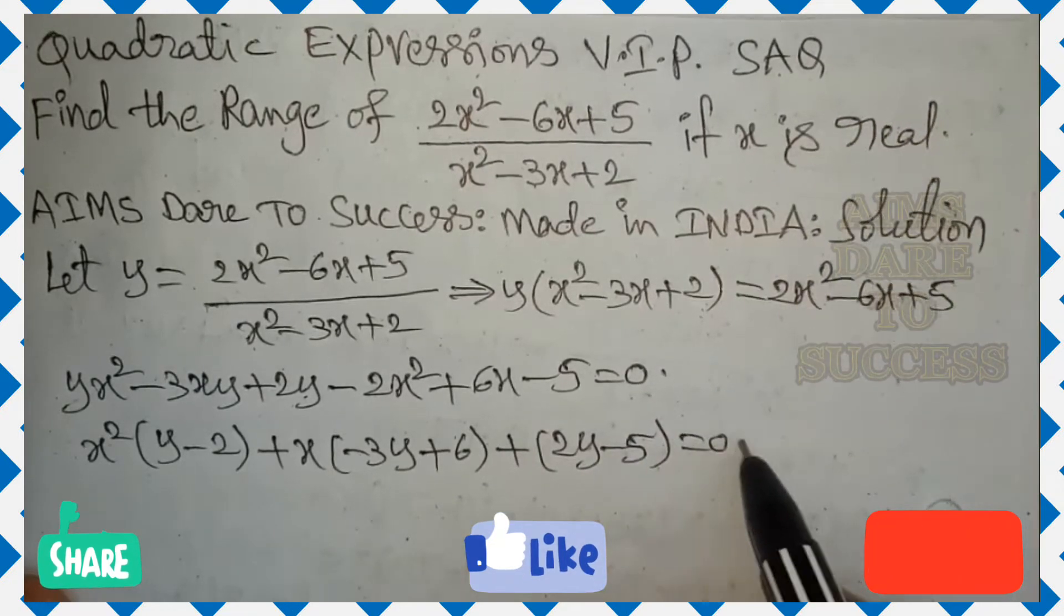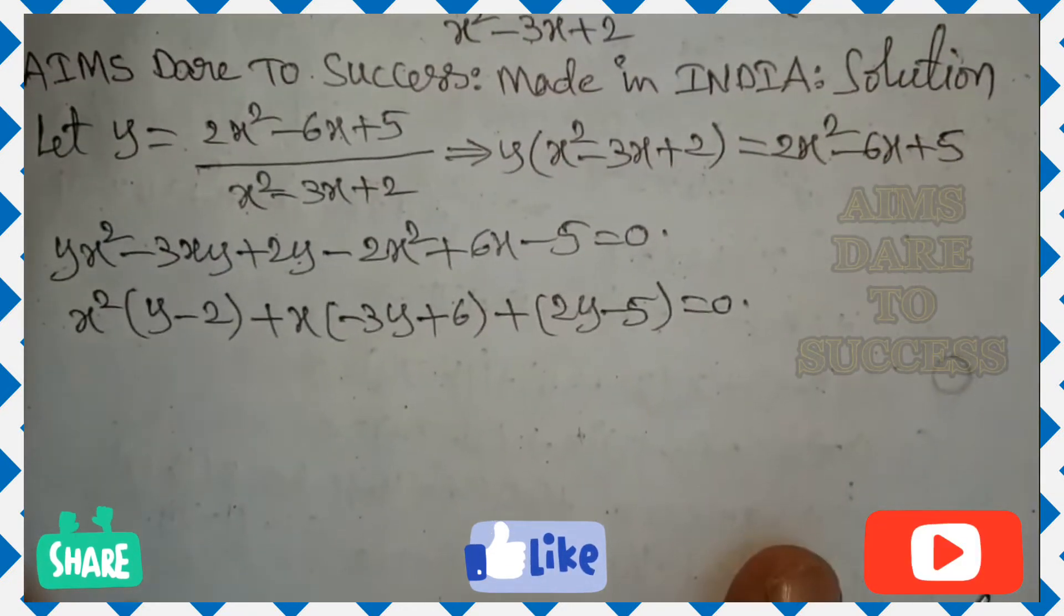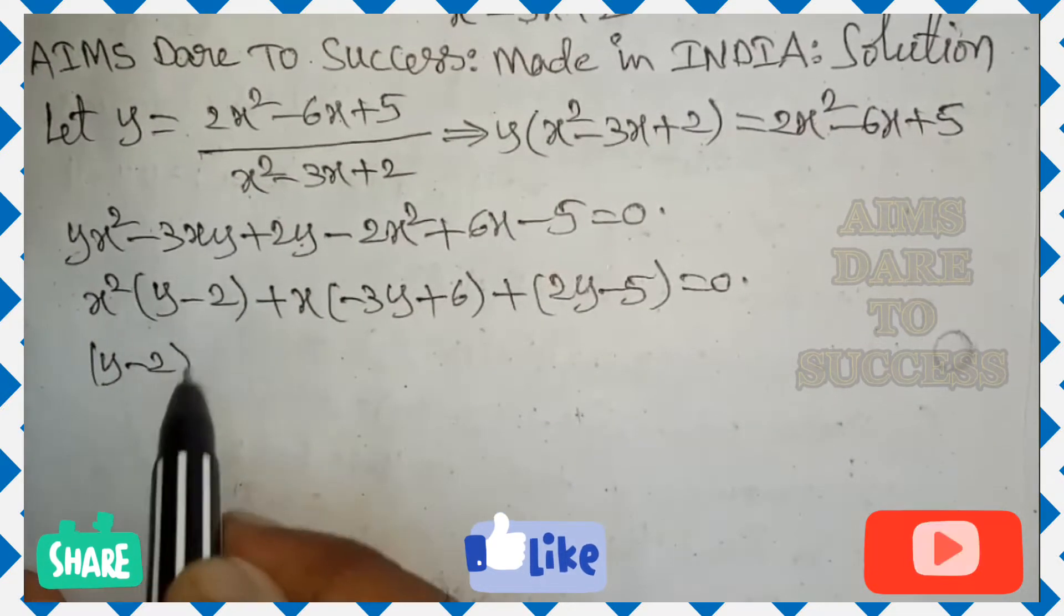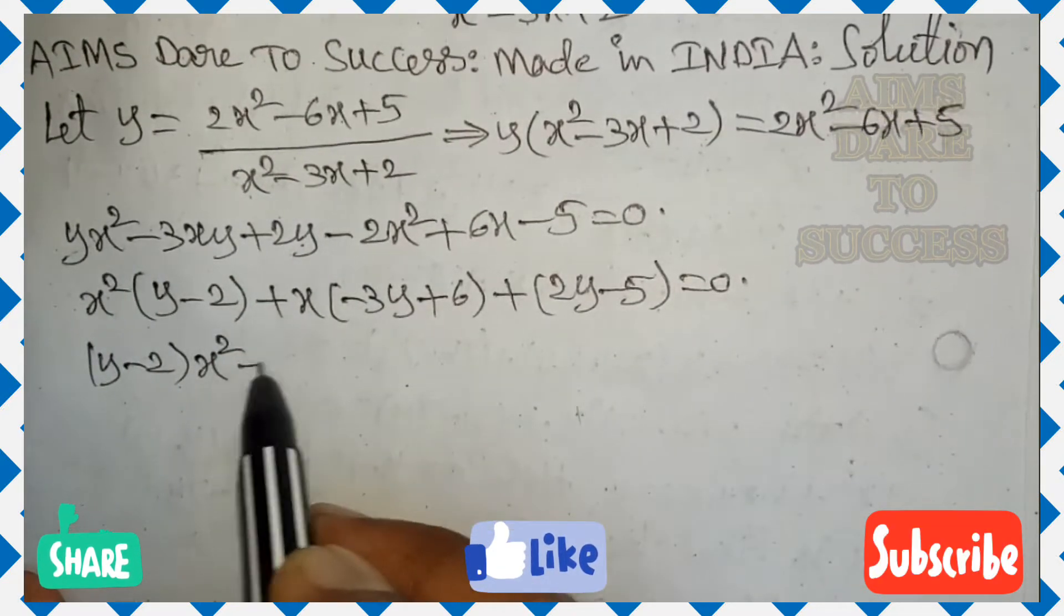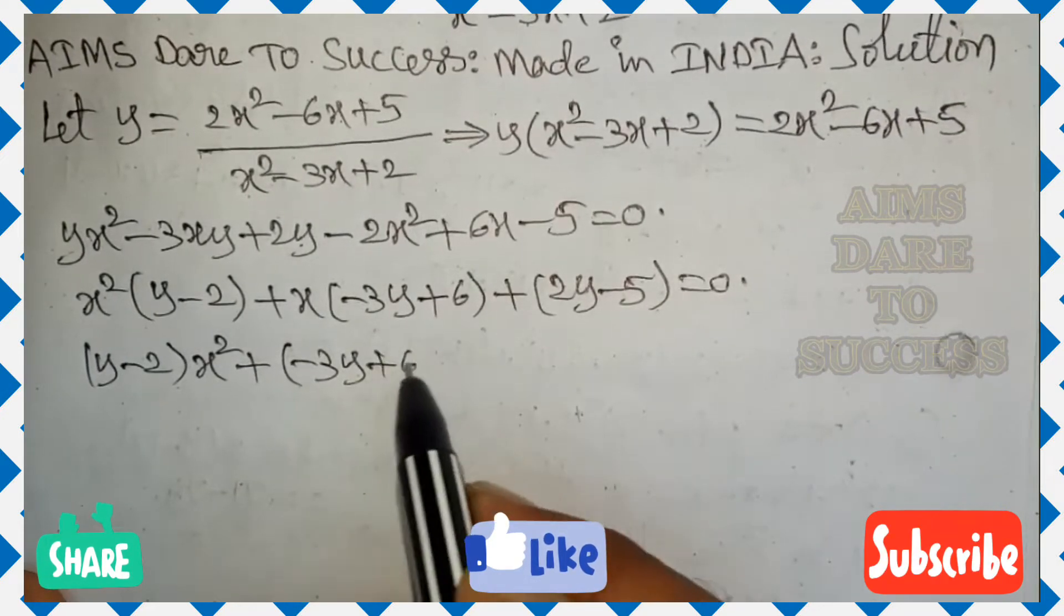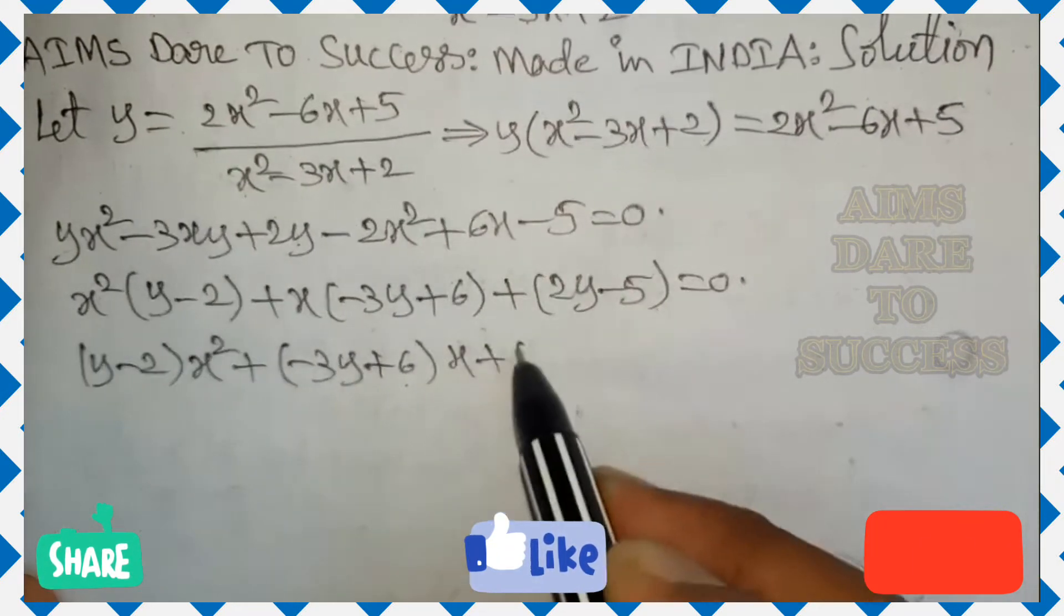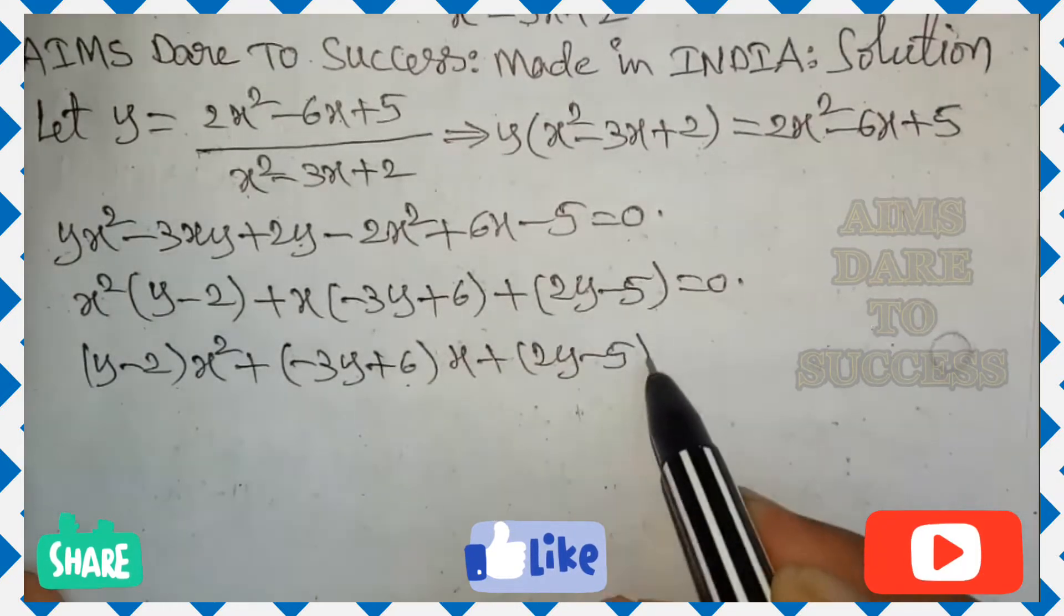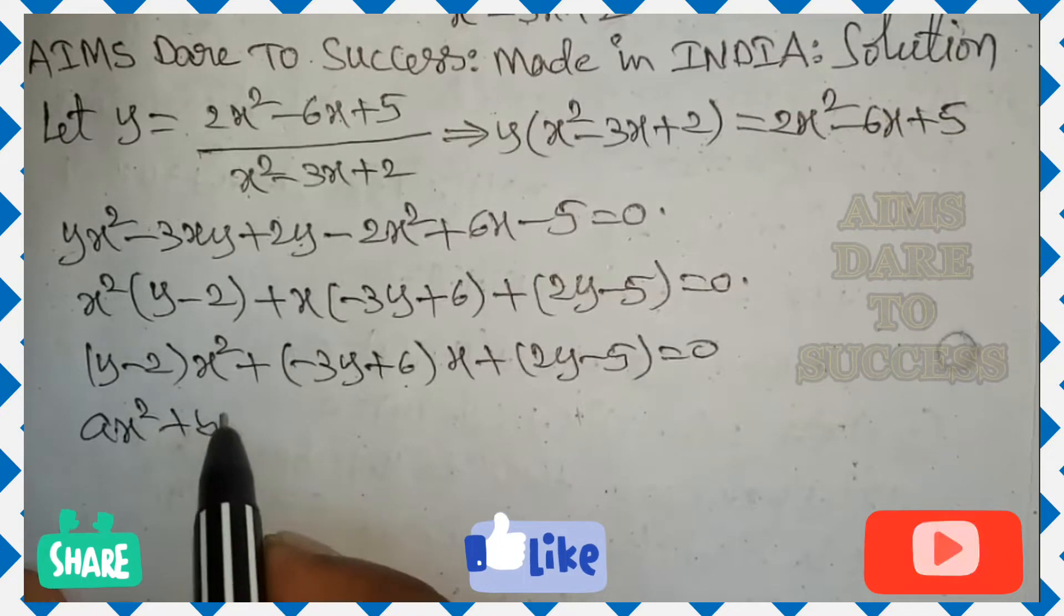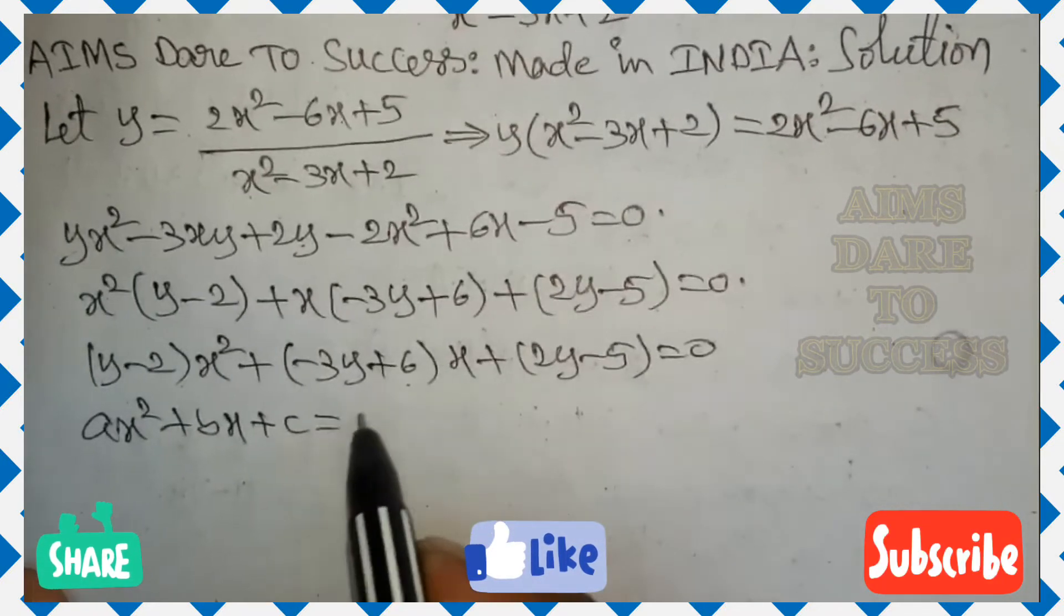2y minus 5 write in one bracket equal to 0. And write according to formula y minus 2 into x square plus minus 3y plus 6 into x plus 2y minus 5 is equals to 0. This is in the form of ax square plus bx plus c is equal to 0.